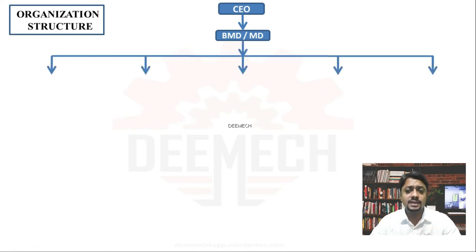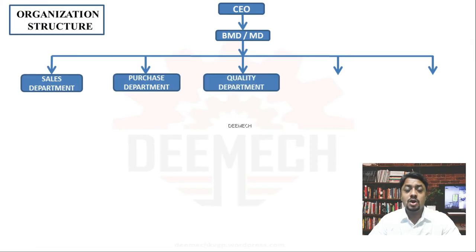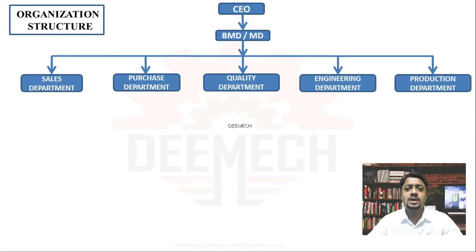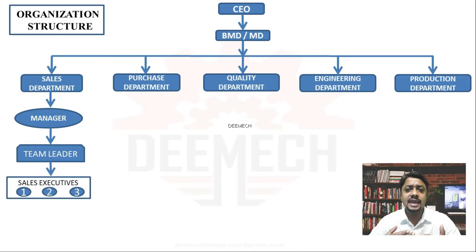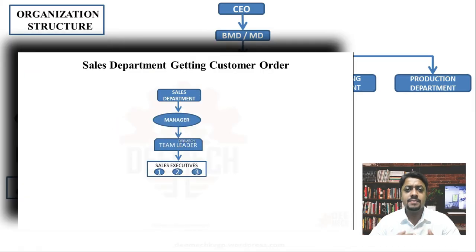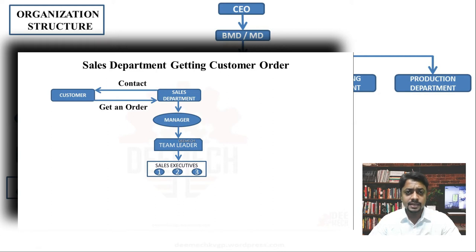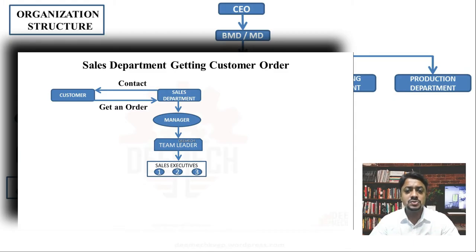There are various departments: sales, purchase, quality, engineering, production, and so on. Under the sales department we have a sales manager, then a team leader, then sales executives — each with a unique role. The primary role of the sales department is to get customer orders, which then become projects for the organization. On successful completion, they deliver the project to the customer.